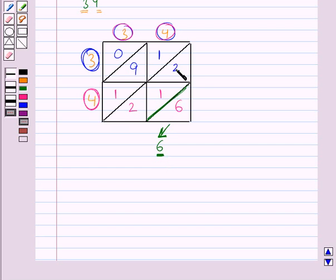Now next we move on to this diagonal. Here the digits are 2, 1 and 2. The sum of these digits is 5. We underline here 5.